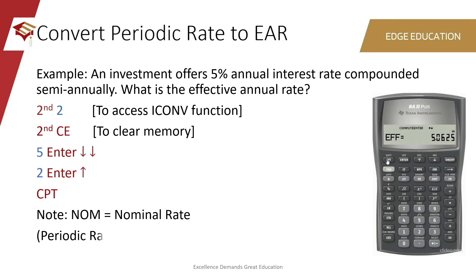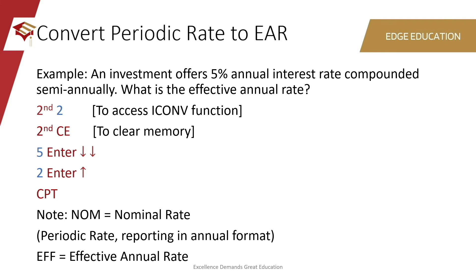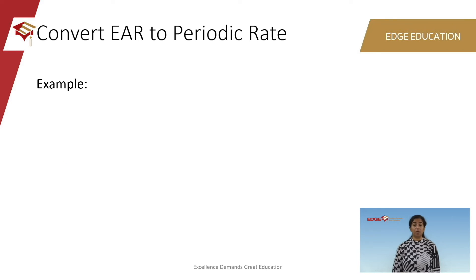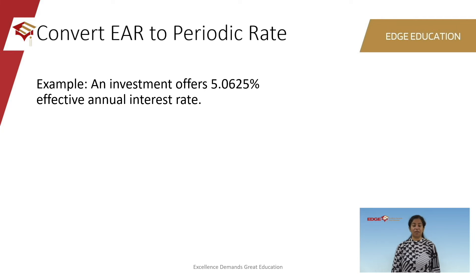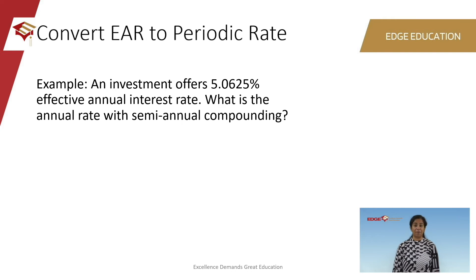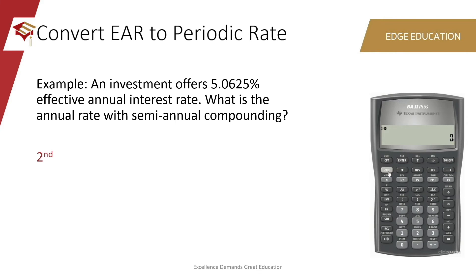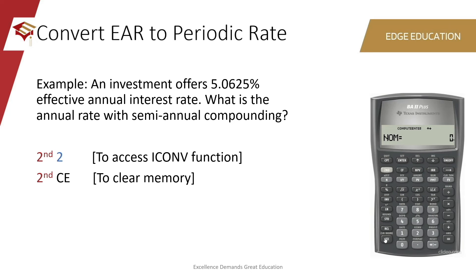This is the interest you will be earning on a per annum basis if you took into account the semi-annual compounding. Now let's look at an example where we go from the EAR to a periodic rate, which is in reverse to the previous example. An investment offers a return of 5.0625% on an effective annual basis. What is the annual rate with semi-annual compounding? To do this, we'll once again press the yellow button and number 2 to get inside the interest conversion application. Within the application, we will clear the calculator memory by pressing the yellow button and CE. You are now ready to key in the inputs. This time, the example has provided us with the effective rate, so press the down arrow key until you see EFF, which stands for effective. Type in 5.0625 and press the enter button on top.